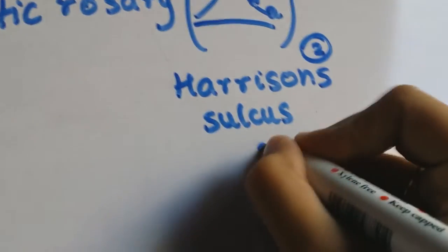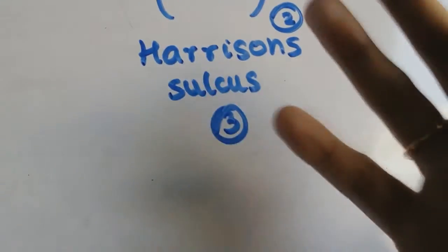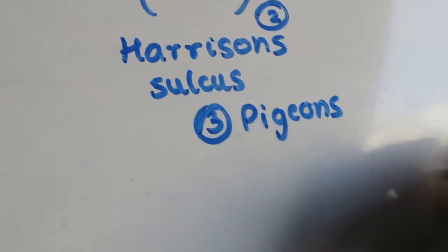And the third thing that patients with Rickets have on the chest wall is they have an appearance of a pigeon's chest and this is because the sternum is very prominent.